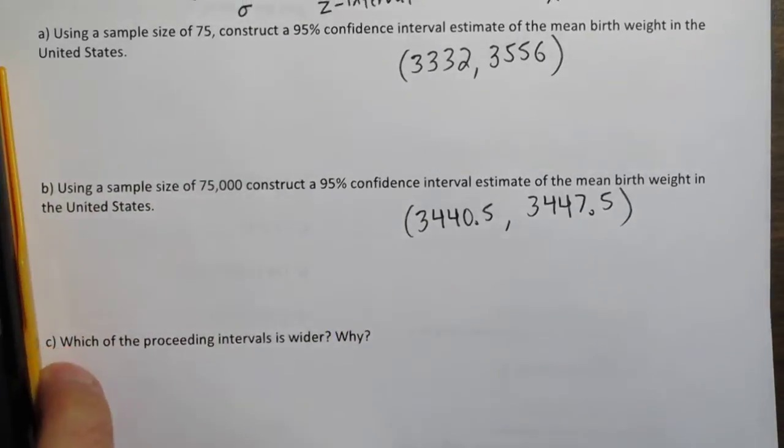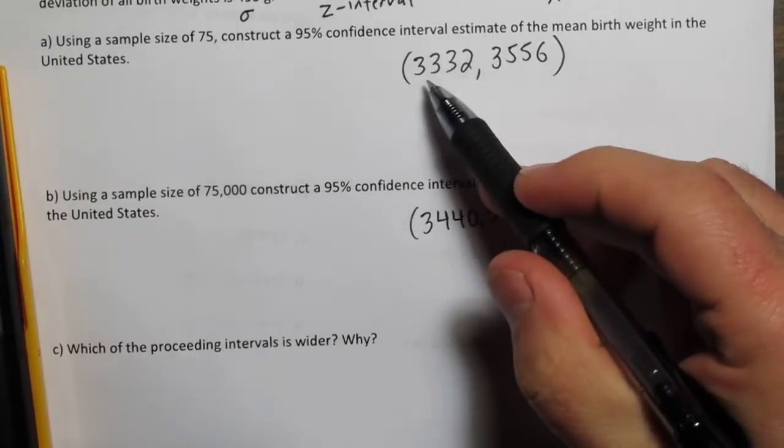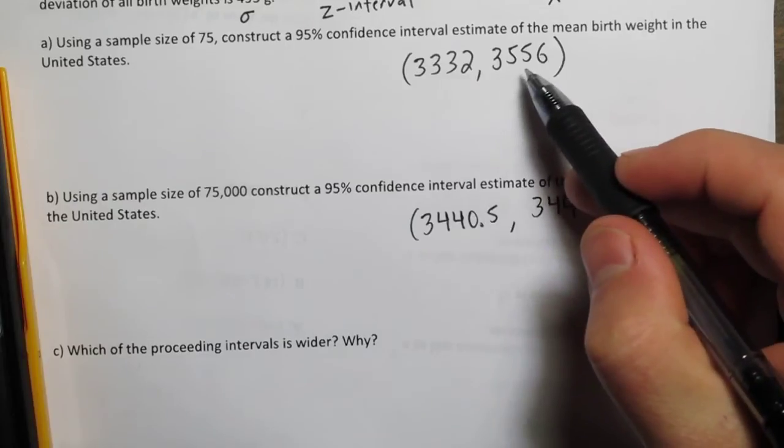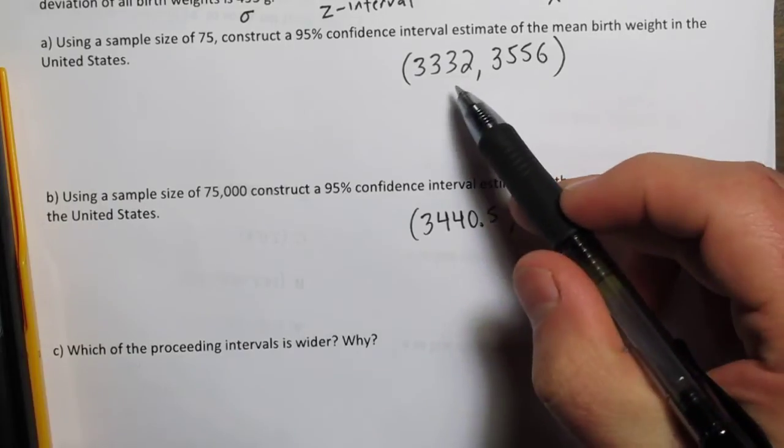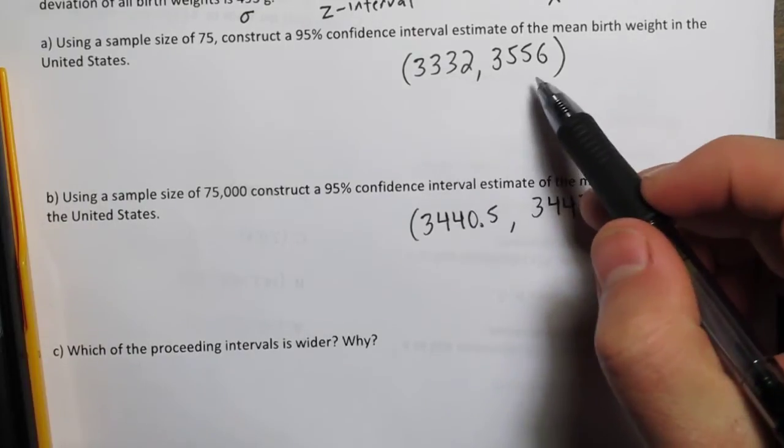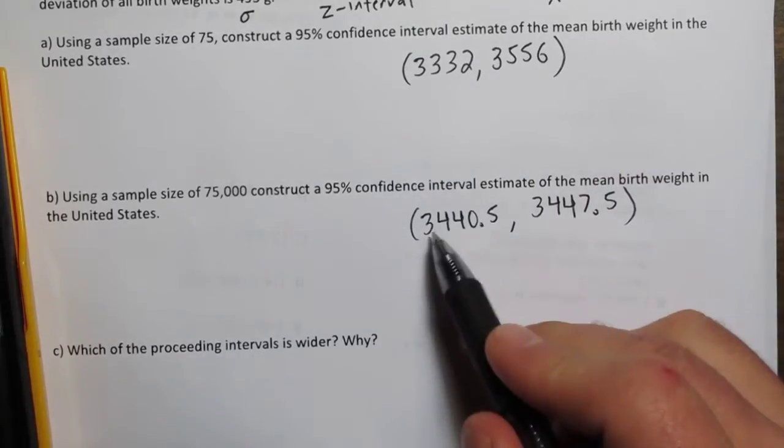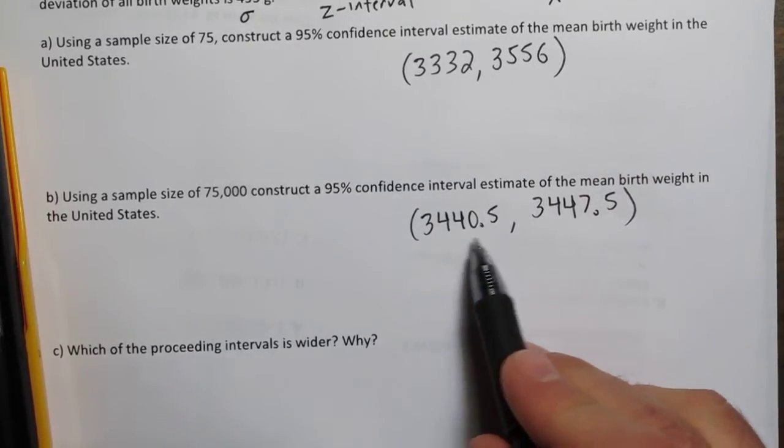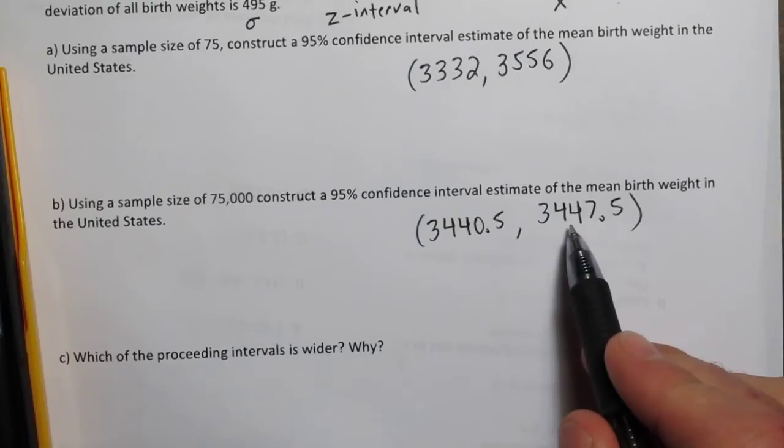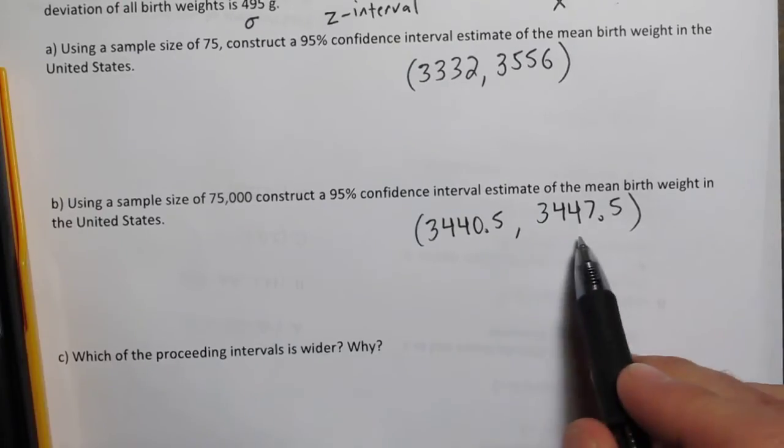Now when looking at these two intervals, this one goes from 3332 to 3556, that's about 200 and some change. Down here we go from 3440 to 3447, so that's 7.